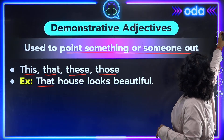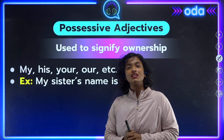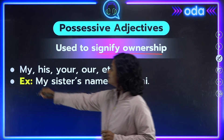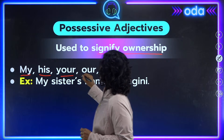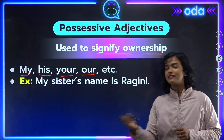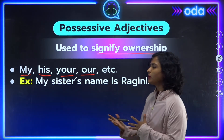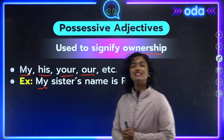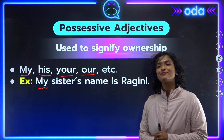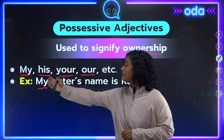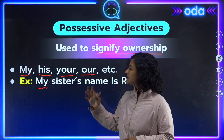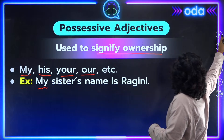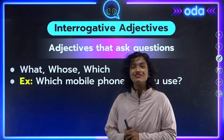Our fourth type is possessive adjectives, which are used to signify ownership. Examples include: 'my,' 'his,' 'your,' 'our,' and 'theirs' — all used to talk about what belongs to someone. For example, 'My sister's name is Ravini' — here 'sister' is the noun and 'my' is the possessive adjective telling us whose sister we are talking about.